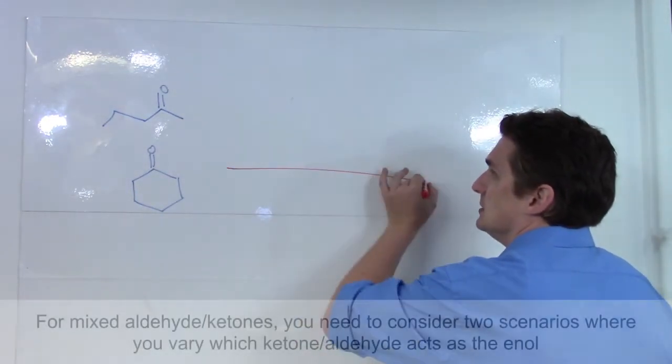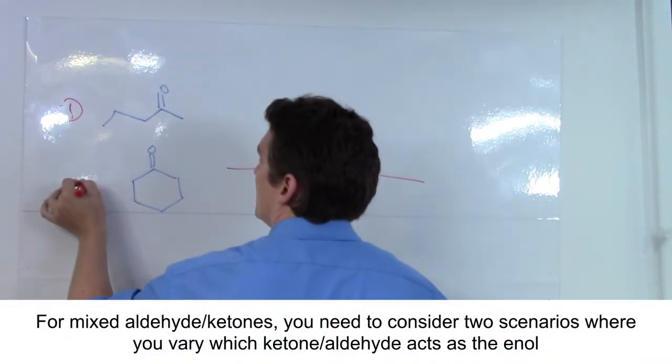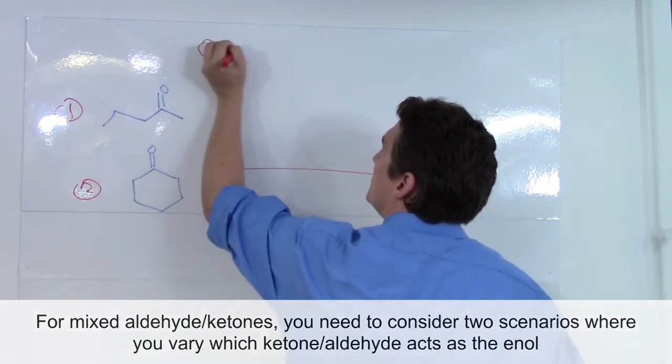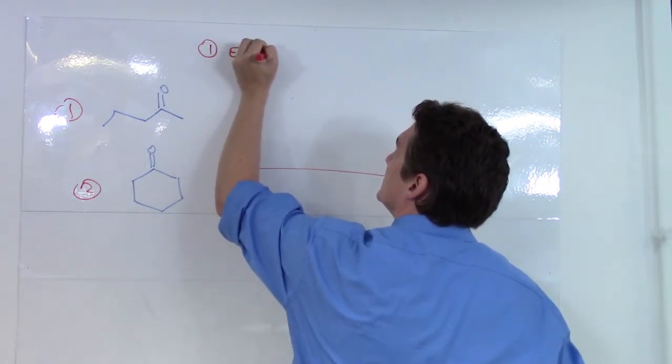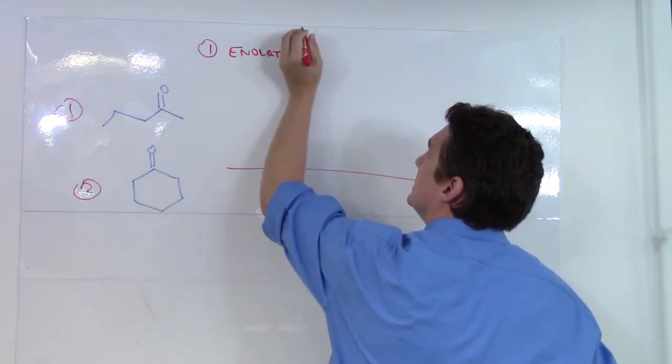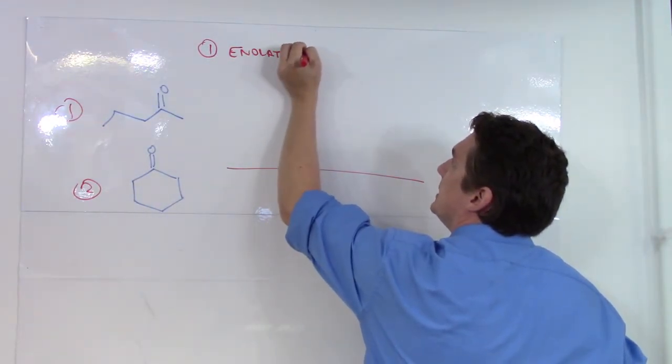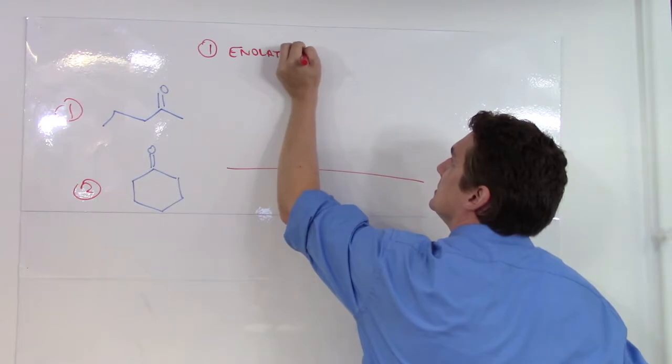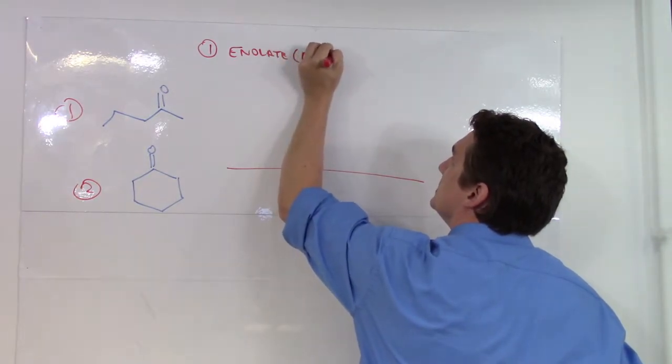So in scenario one, let's say it was compound one and compound two. Compound one here is going to act like the enolate. Because it's going to act like the enolate, it's going to carry the final ketone.